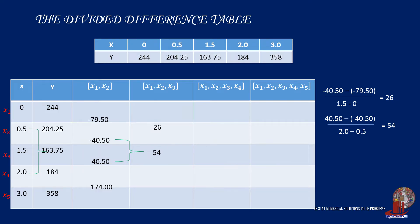The next second difference is 40.50 minus negative 40.50 and this is divided by 2 minus 0.5, which gives us 54. The last value in the second difference column is solved from 174 less 40.50 divided by 3 minus 1.5 and that is 89.